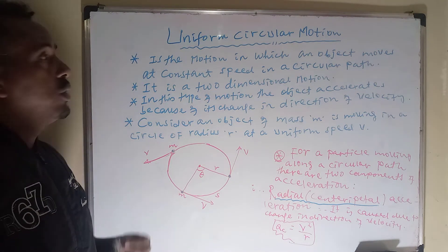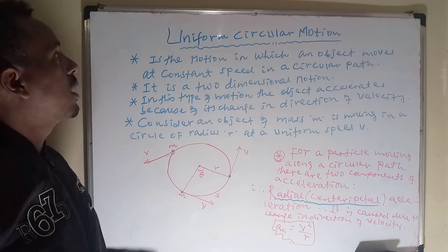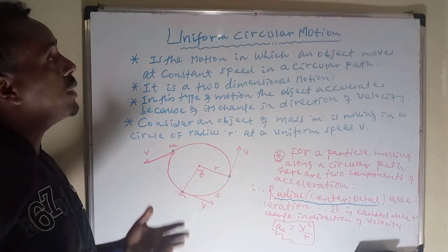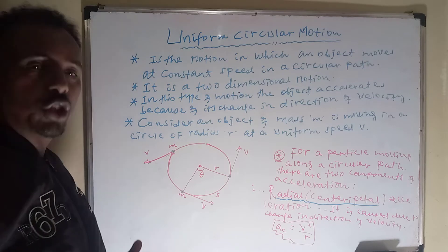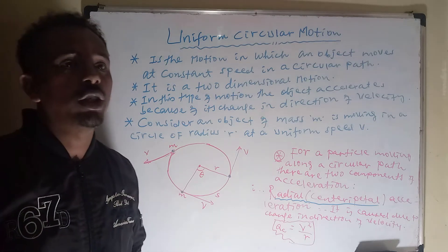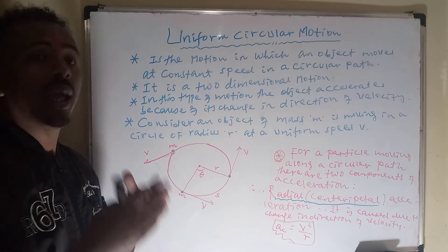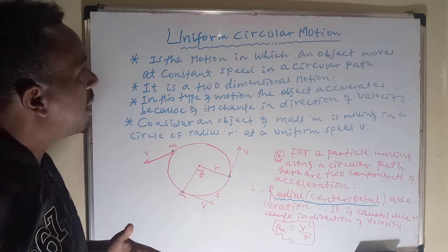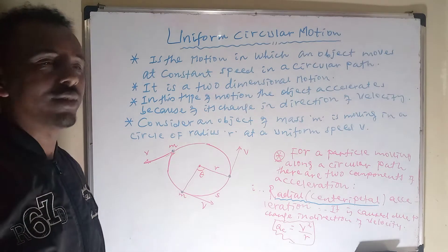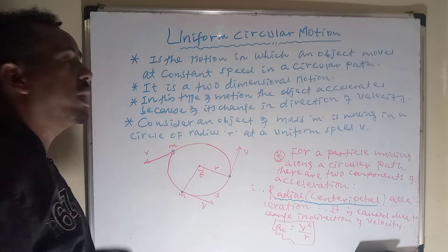Uniform circular motion is a part of kinematics. It is a two-dimensional motion, just like projectile motion. Kinematics is a branch of mechanics that studies motion without concern for its causes.